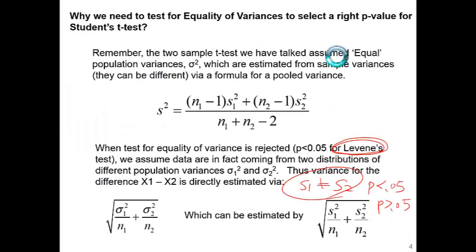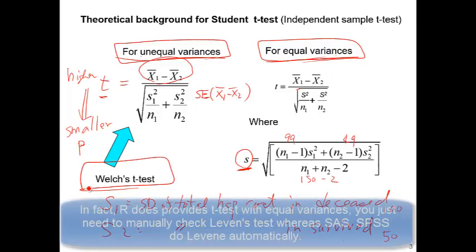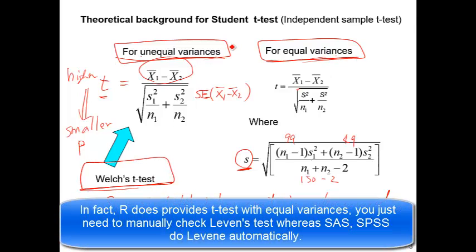In a separate video, I show how to conduct t-tests in R. What R does is use the unequal variances formula — R does not provide an equal variances result; it only provides the unequal variances test, also called Welch's t-test. Welch's t-test is valid even when the variances are equal, so R only computes that one version.